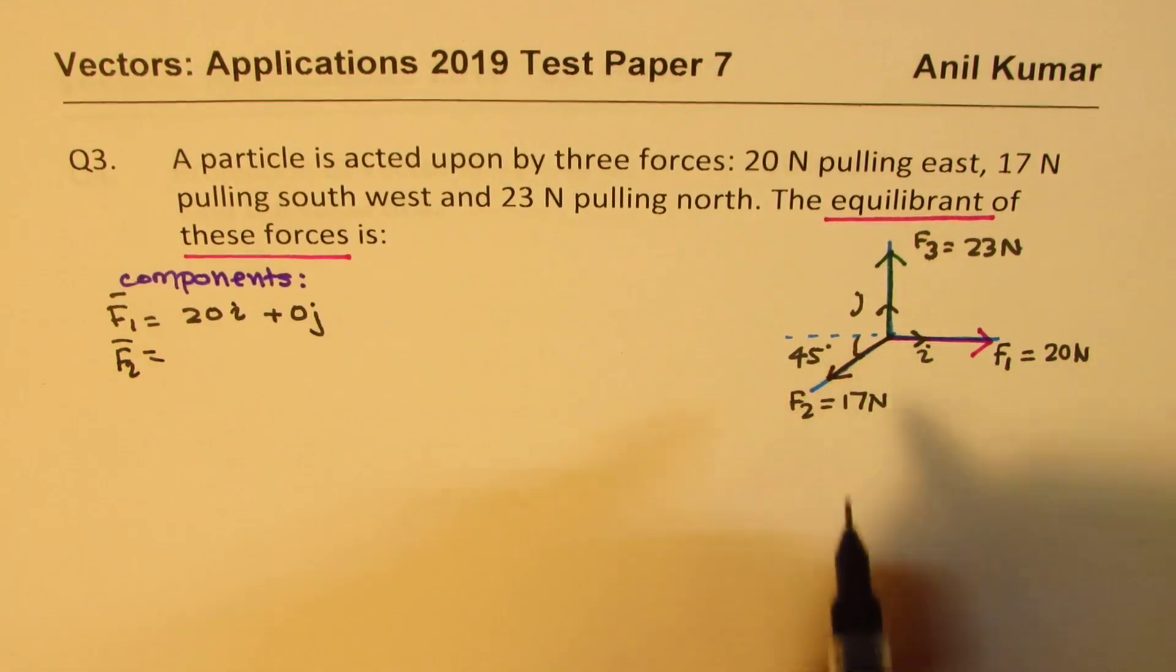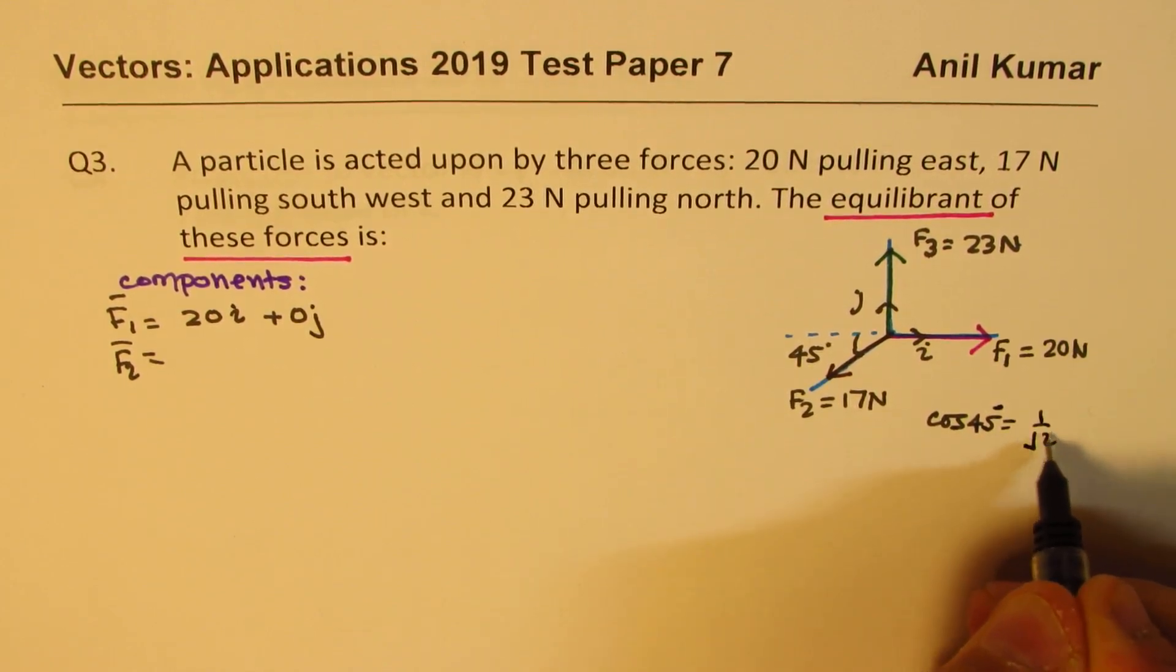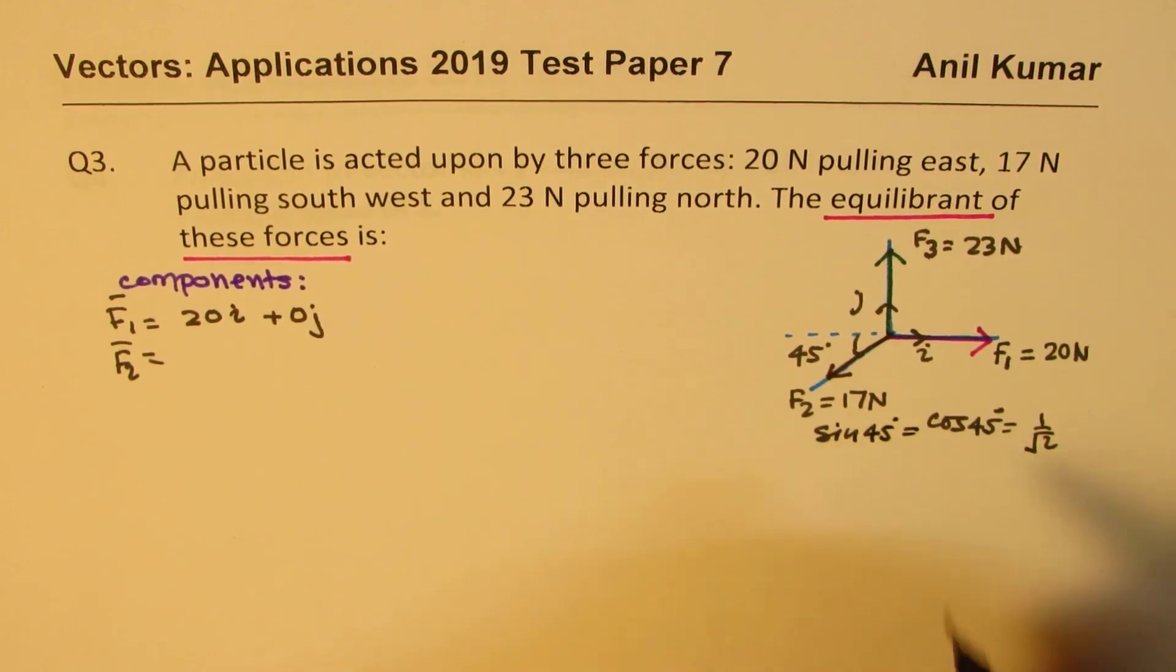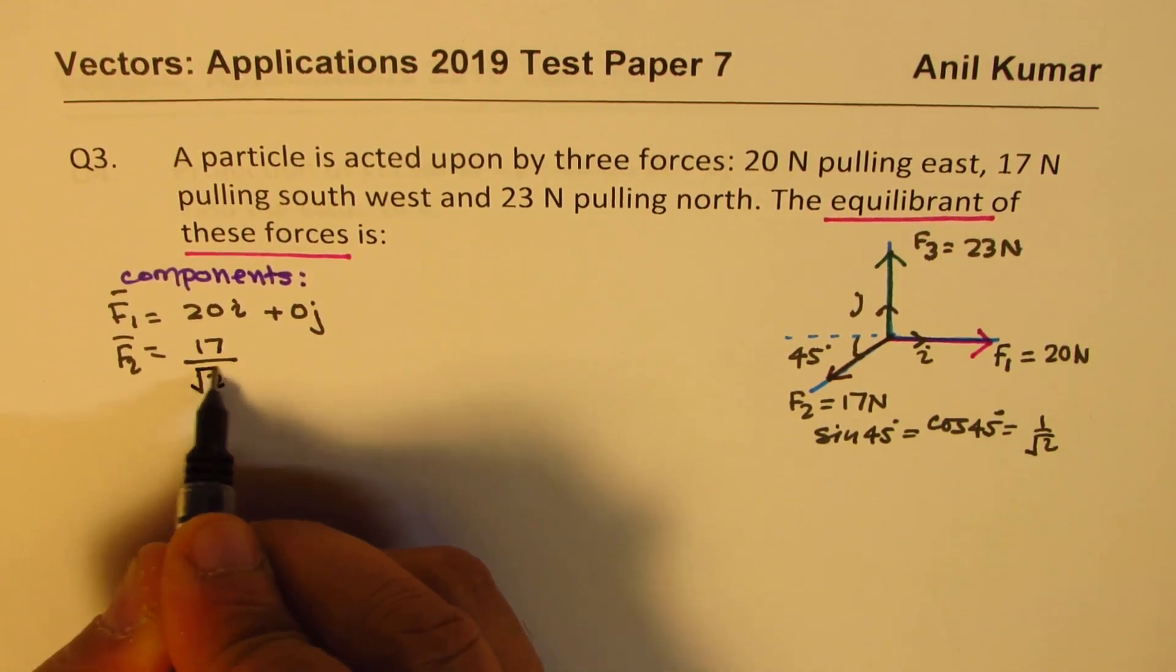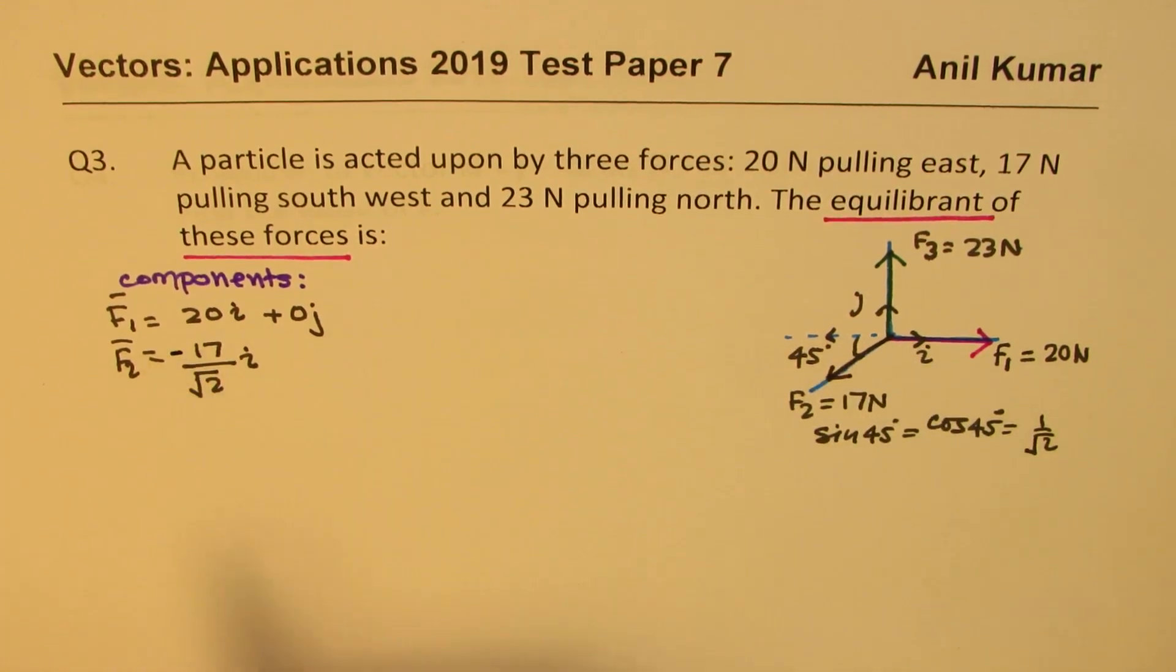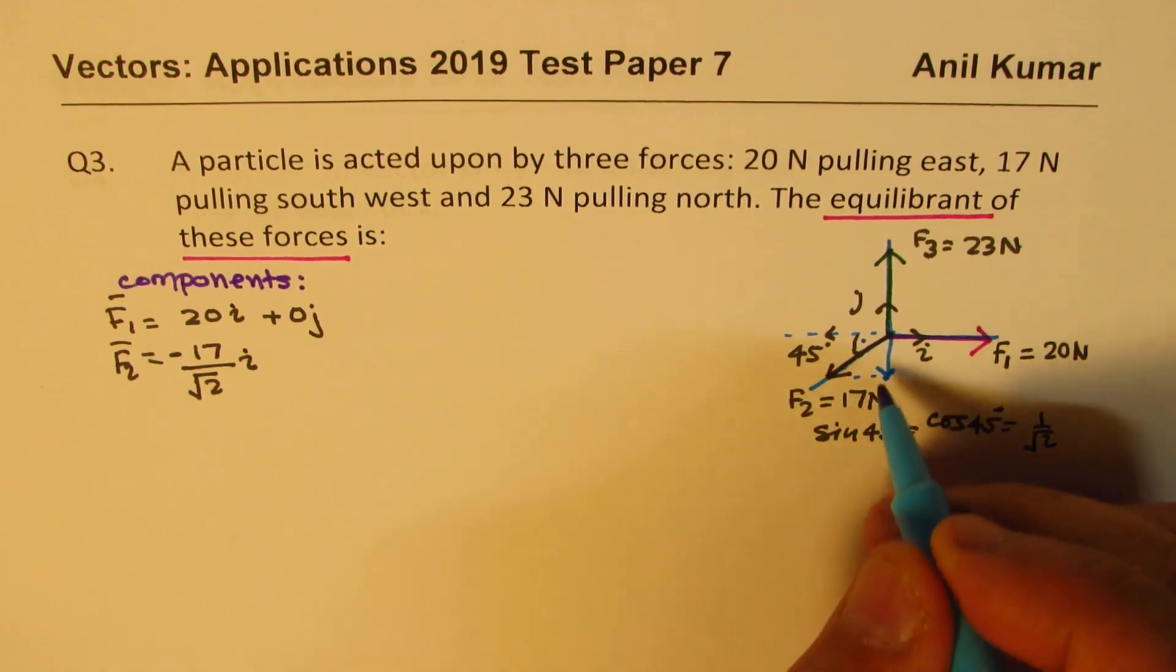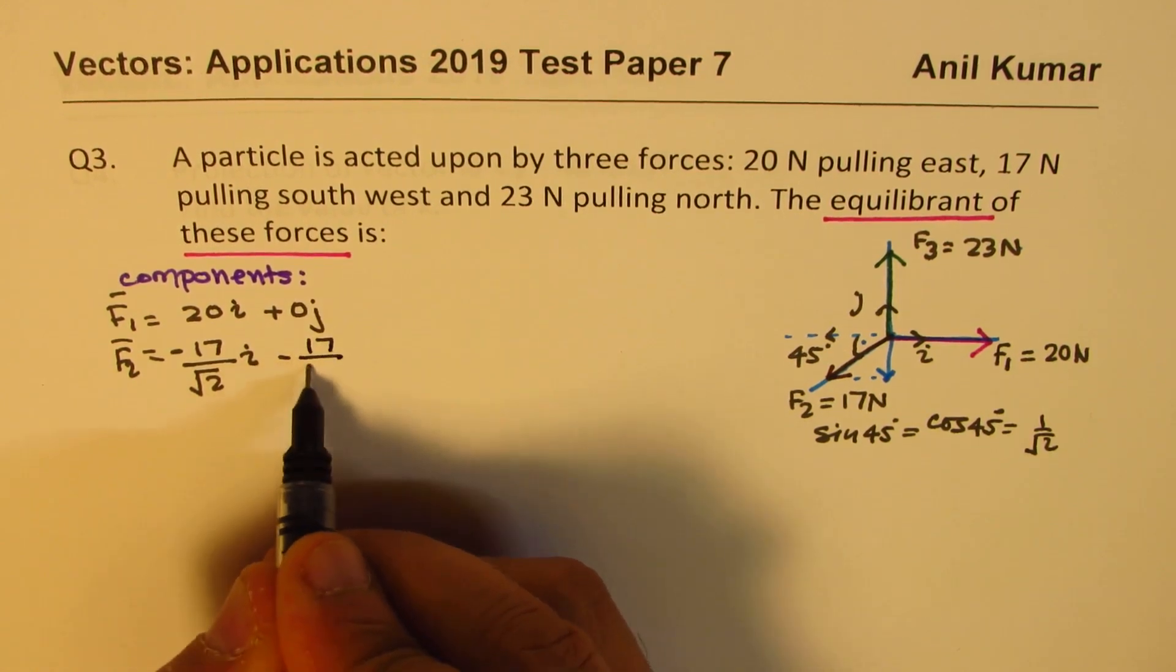Force 2, which is this one, cos of 45 degrees is 1 over square root 2 and sin of 45 is also the same. So here this will be 17 over square root 2 i. Since it is acting in negative direction, we have to write negative here. Similarly, the other component will be minus 17 over square root of 2 j.